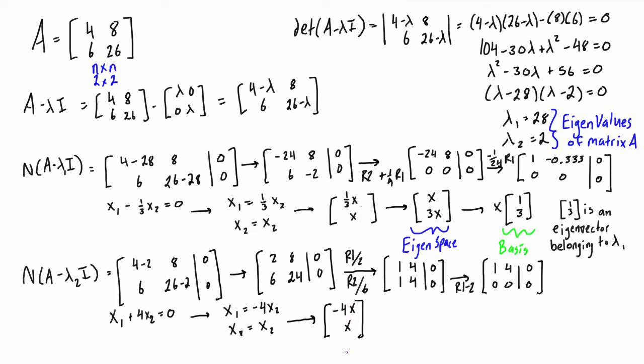Every vector that has this form will make up the eigenspace belonging to lambda 2. All we have to do is pull out that x to get a basis, which is [-4; 1]. This basis is one of the eigenvectors that belongs to lambda 2. Actually, any multiple of [-4; 1] is an eigenvector that belongs to lambda 2.